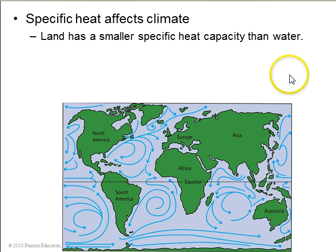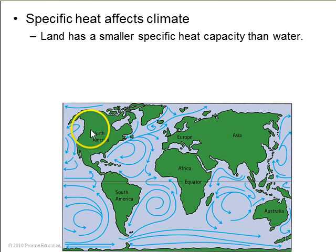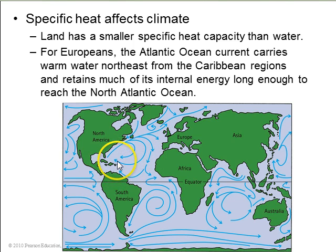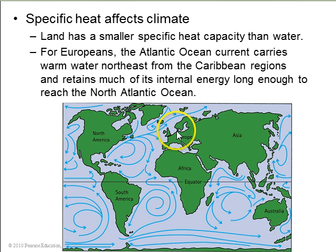Specific heat affects climate in the sense that land has a smaller specific heat capacity than water. So ocean currents can carry a lot of heat — for example, in the Atlantic, from the Caribbean regions up northeast to warm the Western European countries.